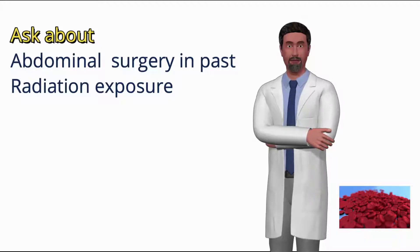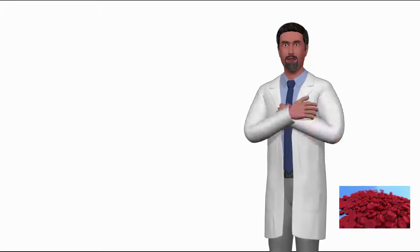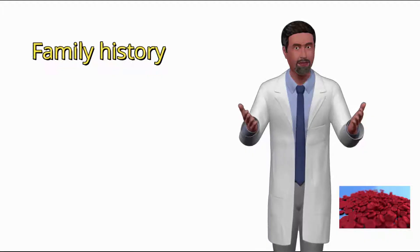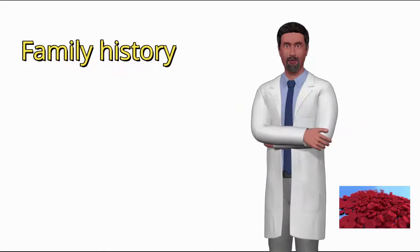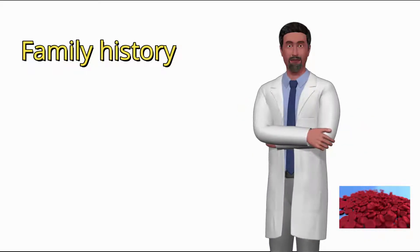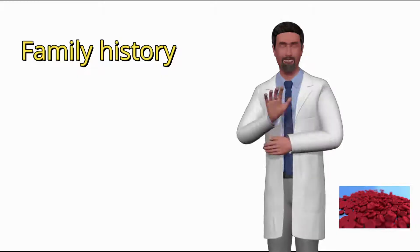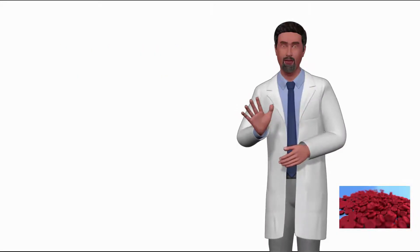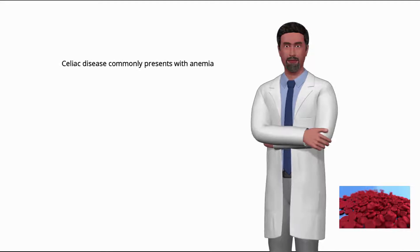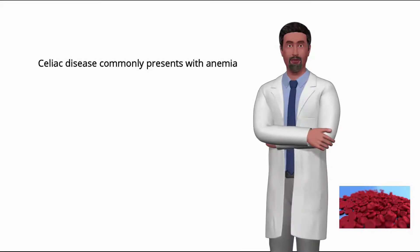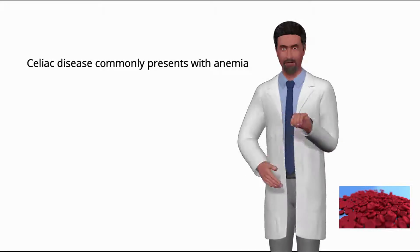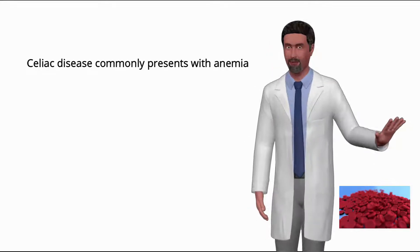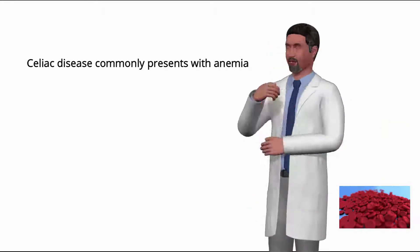Ask about any abdominal surgery in the past, as well as radiation exposure. Ask the patient: is there any family history of such disease? This can give clues about inherited forms of hemolytic anemia. Remember that celiac disease commonly presents with anemia, so ask about history of chronic diarrhea and intolerance to wheat to rule out celiac disease.